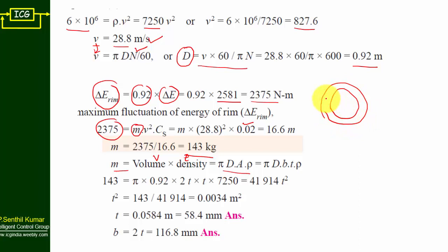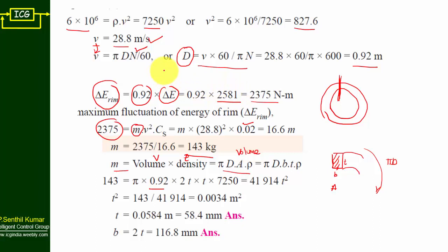The flywheel cross-section is rectangular with breadth × thickness as the area. Volume equals area × circumference = breadth × thickness × πD. Using mass = ρ × volume: 143 = π × 0.92 × 2t × t × 7250, since b = 2t. Solving, 41914 × t² = 143, giving t = 58.4 mm and therefore breadth b = 2t = 116.8 mm.